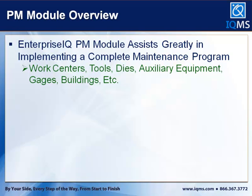The PM module assists greatly in implementing a complete maintenance program. You can hook a lot of things into the maintenance module: work centers, tools, dies, auxiliary equipment, gauges, buildings, etc. — anything you want to set up and track through preventive maintenance. That means creating work orders, tracking costs associated with the maintenance, tracking labor, and scheduling labor.